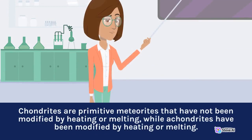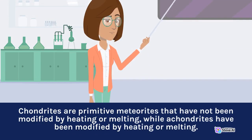Chondrites are primitive meteorites that have not been modified by heating or melting, while achondrites have been modified by heating or melting.